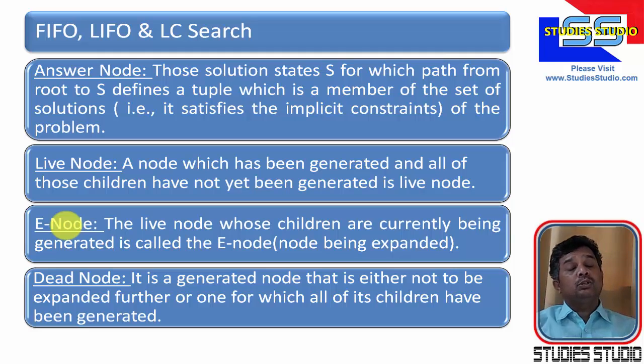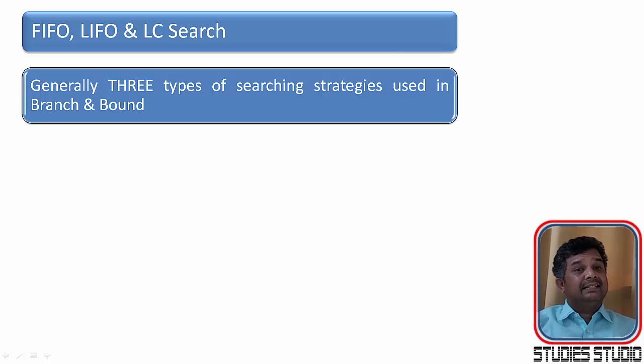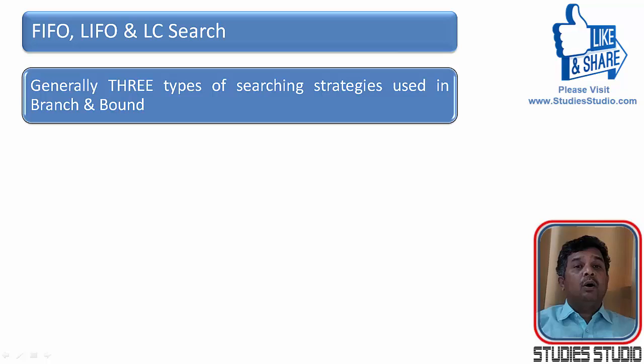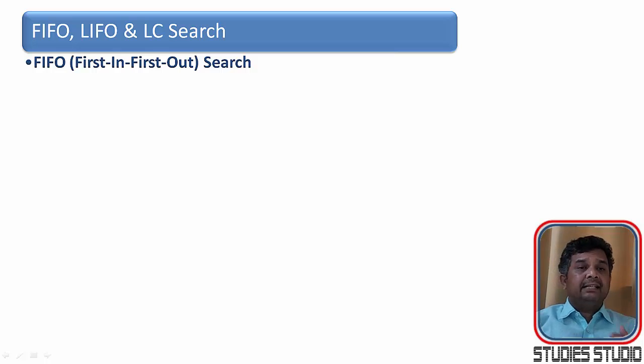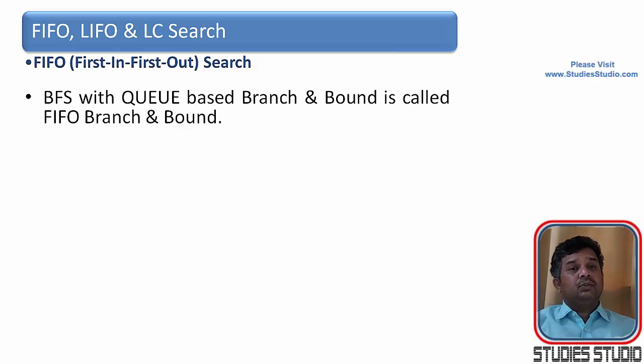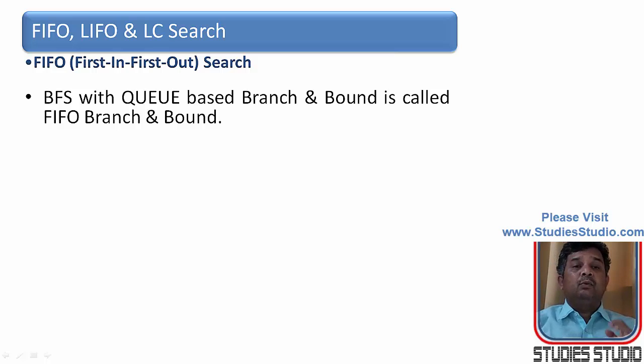So basically there are three types of searching strategies that we use in branch and bound. Those are FIFO or first in first out search, then LIFO, last in first out search and least cost search. Let us try to understand them one after another. First one is FIFO search. FIFO refers to a queue data structure. In graph traversal, BFS uses a queue. And when we are implementing a queue, obviously it has to be first in and first out approach.